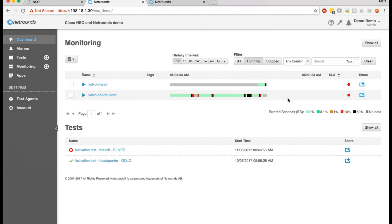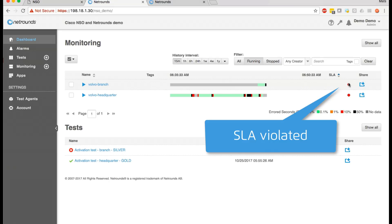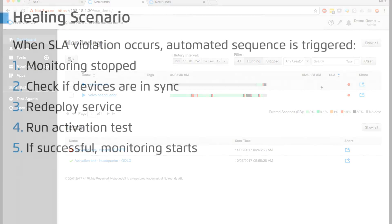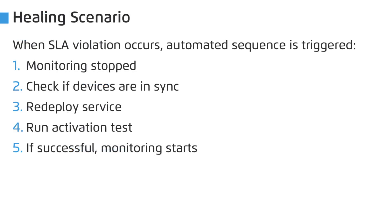NetRounds detects the SLA violation and triggers NSO to automatically begin a couple of different activities. NSO will now stop the monitor, check if the devices are in sync, restore the service configuration to its original intent by redeploying the configuration, and test that the restored service works — and finally restart the active monitoring once that has passed.